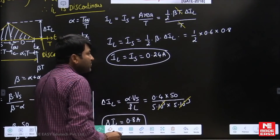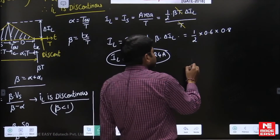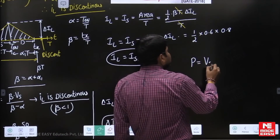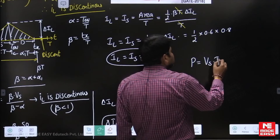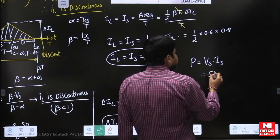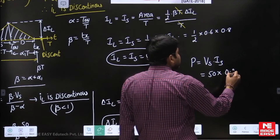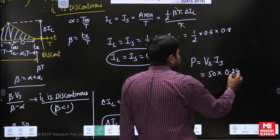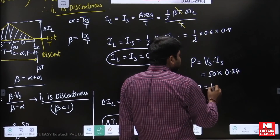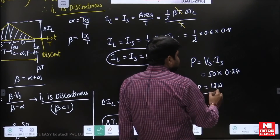Now we calculate the power transferred by the supply. Power transferred = Vs × Is = 50 × 0.24 = 12 watts.